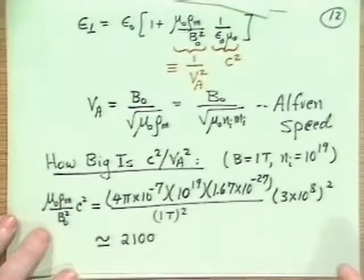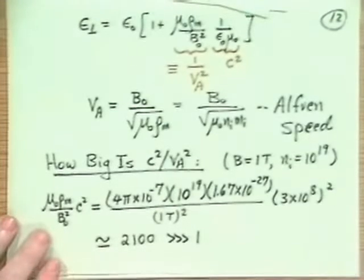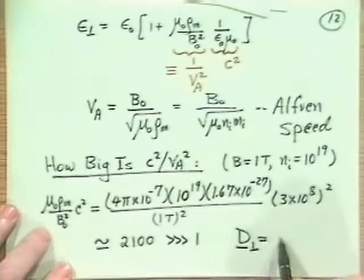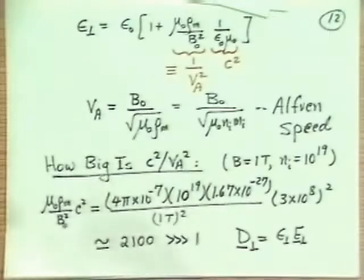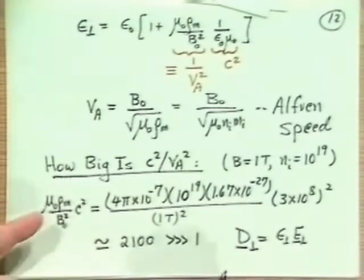It's almost my ion to electron mass ratio, 2,000. That's a big number, right? So what that says is that if I apply, what we're saying is D perp, epsilon perp, E perp. If I apply an electric field perpendicular to the magnetic field, the dielectric constant is actually one heck of a lot larger than 1, than the dielectric constant of free space. Rather, it's about 2,000 times larger than that. So what this means is when I start shaking the field lines as in a fluctuation, a wave or something like that, there's going to be a big dielectric constant, a big inertia associated with that process.